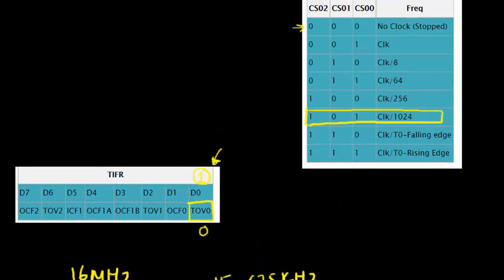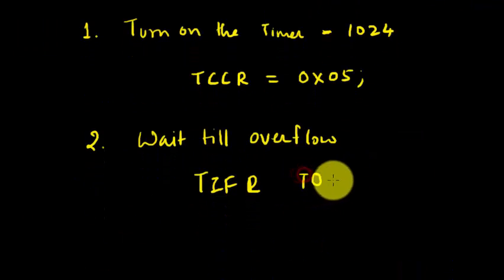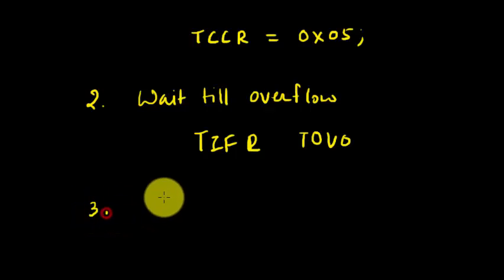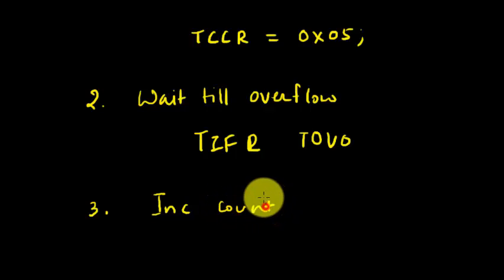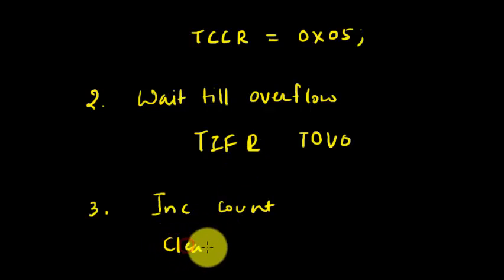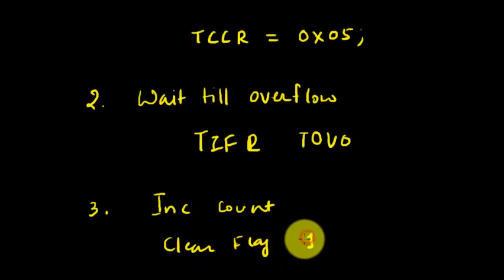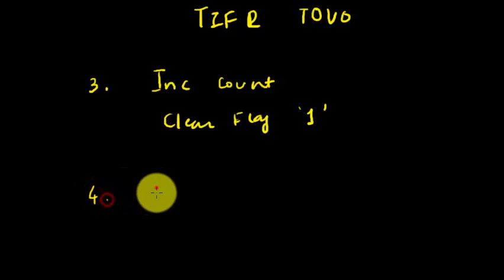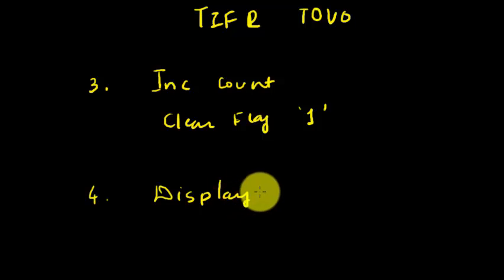Next we need to wait till the timer overflows. To do that we check the TIFR register, and the flag in that register is called TOV0 — Timer Overflow Flag. So we turn on the timer, wait till it overflows, and when it overflows we increment a count variable. Then to count the next overflow we also need to clear the flag by writing 1 — remember that. Then we display the count on the LCD.